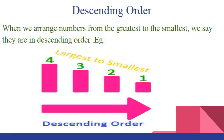What is descending order? When we arrange numbers from the greatest to the smallest, we say they are in descending order. From the example below, we can see that the numbers are arranged from the greatest to the smallest, so we say that these numbers are arranged in descending order.